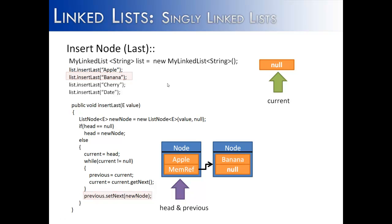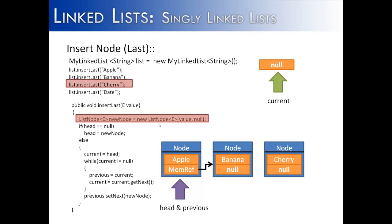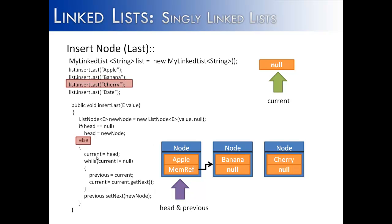Now we're going to try this with Cherry. We create the node Cherry with a next value of null. We check if head is equal to null — no, the head is not null, it's equal to the first node. So we do the else statement, and current equals head, bringing current down to that first node. Head, current, and previous are all this first node.